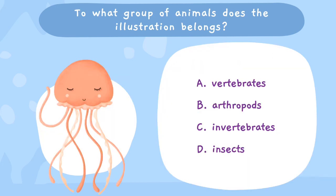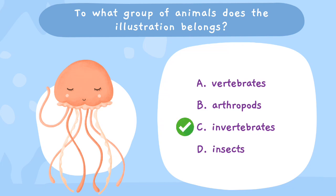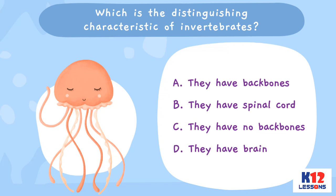To what group of animals does the illustration belong? A. Vertebrates, B. Arthropods, C. Invertebrates, D. Insects. Which is the distinguishing characteristic of invertebrates? A. They have backbones, B. They have spinal cord, C. They have no backbones, D. They have a brain.